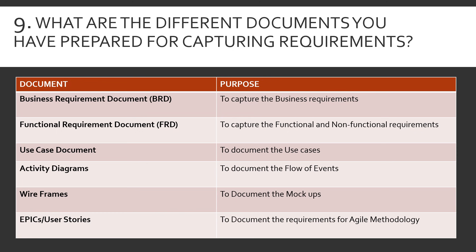The next document is wireframes — screen mockups showing how a screen should look, including buttons, features, and color palette, which can be presented to the engineering team to build accordingly. The last is epics and user stories, which is how requirements are documented in the agile methodology. All the documents mentioned above are more waterfall-oriented, but in agile, requirements are documented as epics and user stories, with supporting documents like activity diagrams, wireframes, and use cases attached as attachments to the user stories and epics for the engineering team to reference.